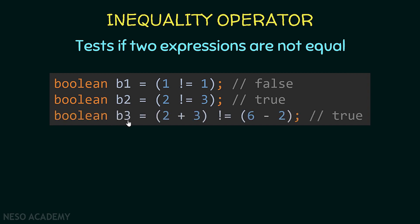Now let's see this example. I'm comparing (2 + 3) with (6 - 2), testing if they are not equal. Two plus three equals five, and six minus two equals four. So I'm comparing if five is different than four — this is true, so b3 will be equal to true. So the equality operator evaluates to true if the values are equal, and the inequality operator evaluates to true if the values are not equal.